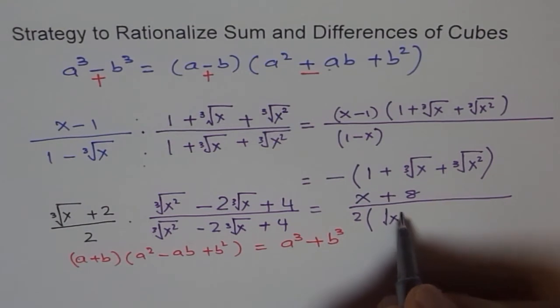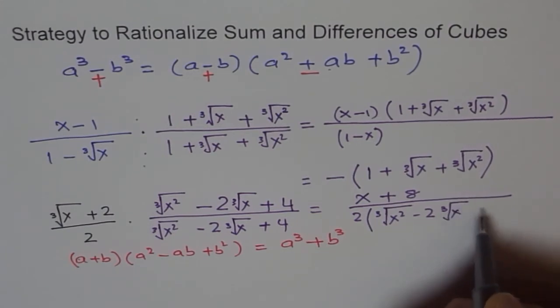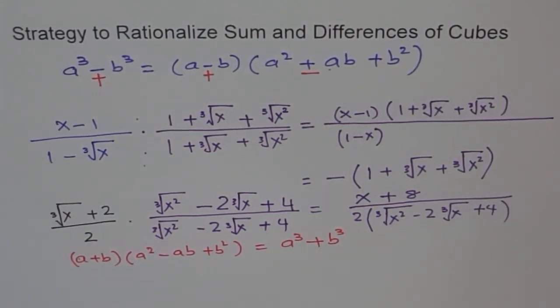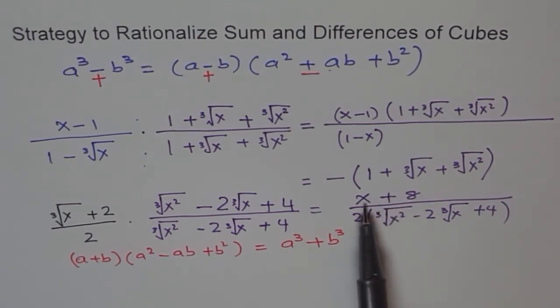∛(x²) - 2∛x + 4. This is what you get as a result. But the idea is that we got rid of the radical from the numerator. So that is what this technique is all about. And it's a very important technique.